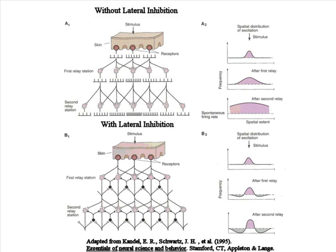The top diagram shows a network that doesn't implement lateral inhibition. After each stage of processing, the sensory signal grows progressively larger — this is the pink area shown in the three charts to the right. At the third stage, it would be almost impossible to discriminate where the sensory signal originated. This network lacks the ability to discriminate.